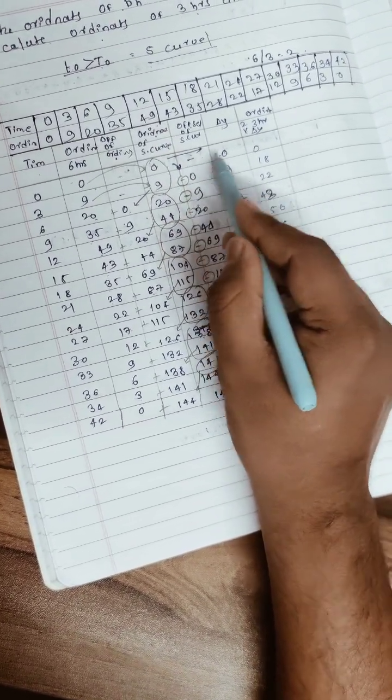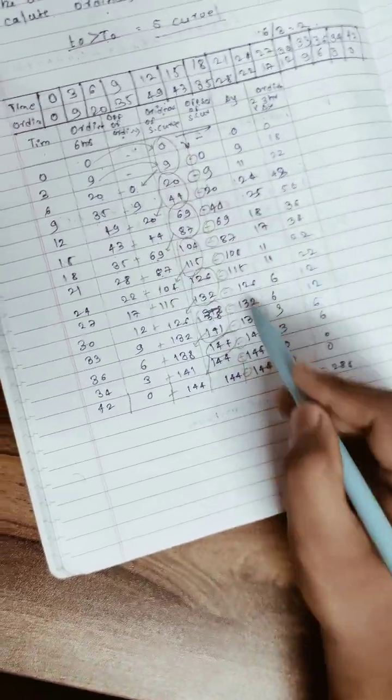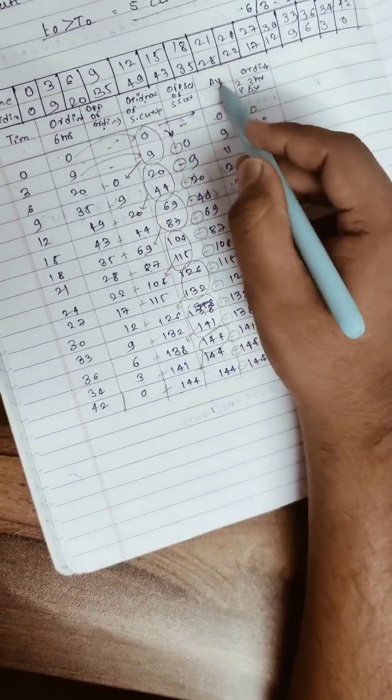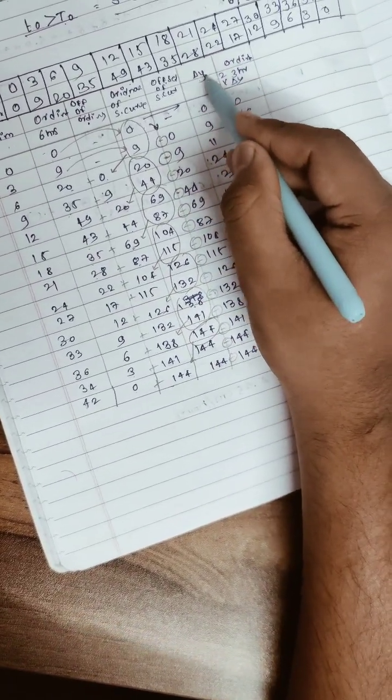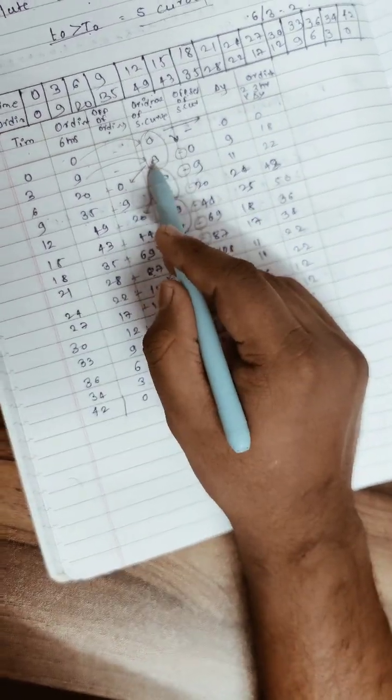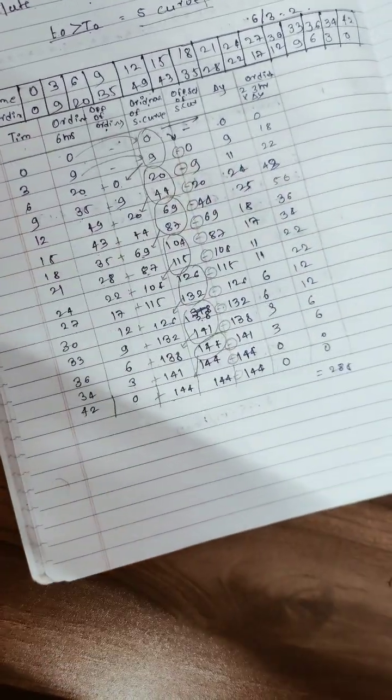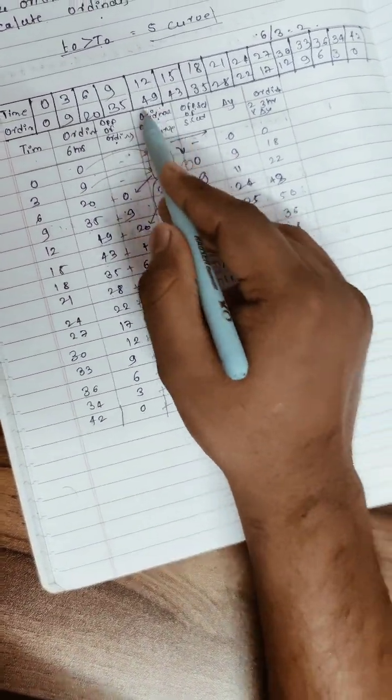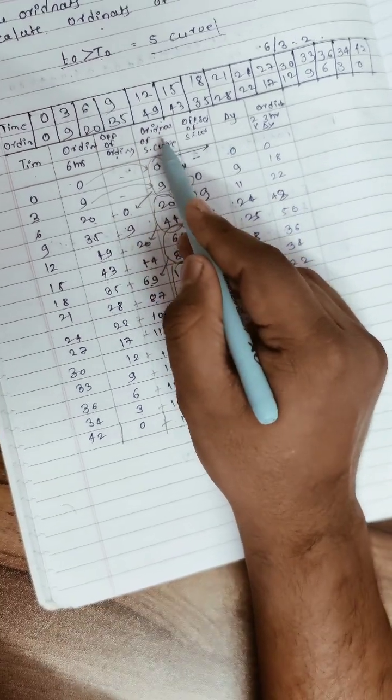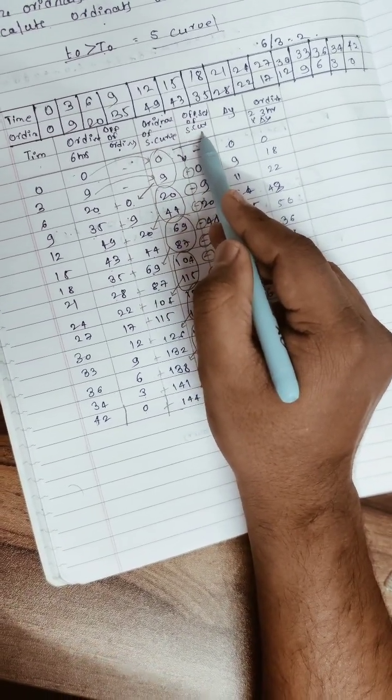When we calculate delta y, we subtract offset of S-curve from ordinates of S-curve: 9 minus 0 is 9, 20 minus 9 is 11, 44 minus 20 is 24.